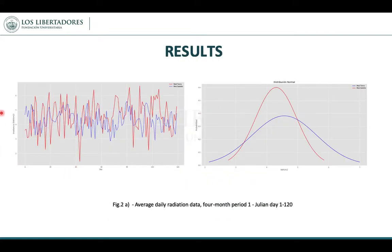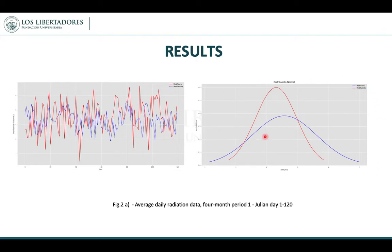We present the results in this image. On the left side of the screen, we have the average daily radiation data in the first period — a 4-month period in a year. The dotted blue line represents the forecasting data of our model, and the solid red line represents the land data, which is our goal. On the right side of the screen, we have the normal distribution of this data, where the blue line represents the land data and the red line represents the forecasting data.